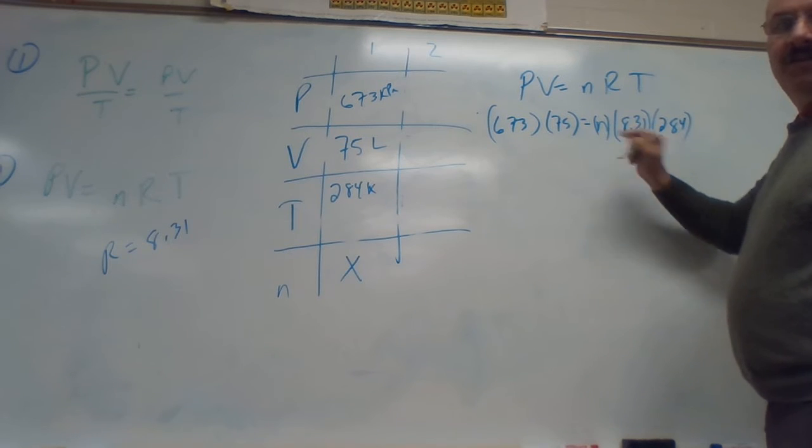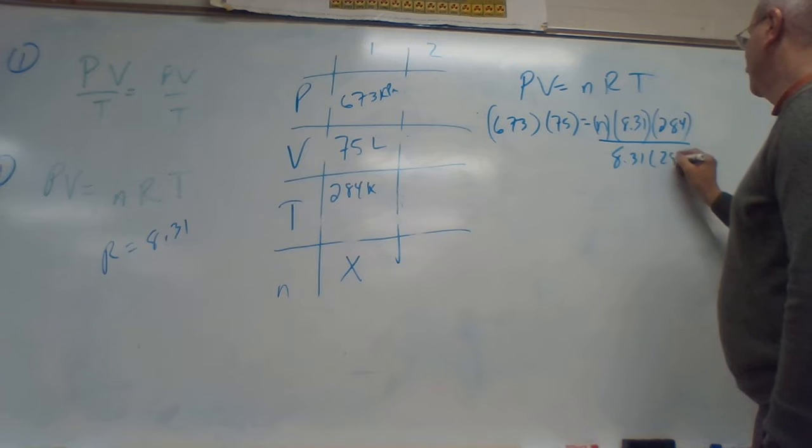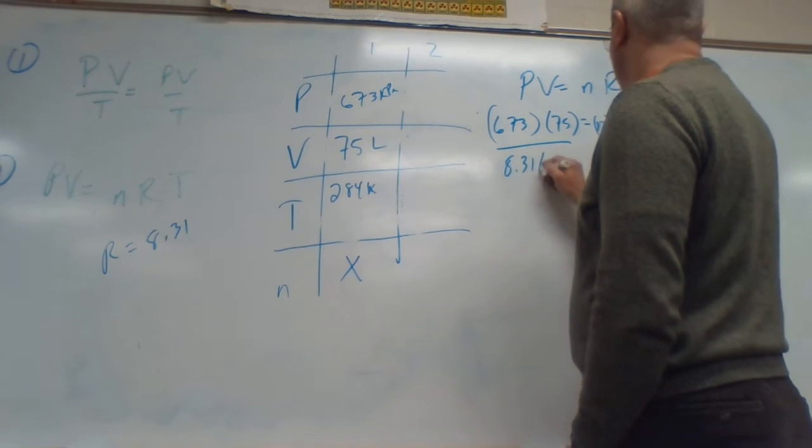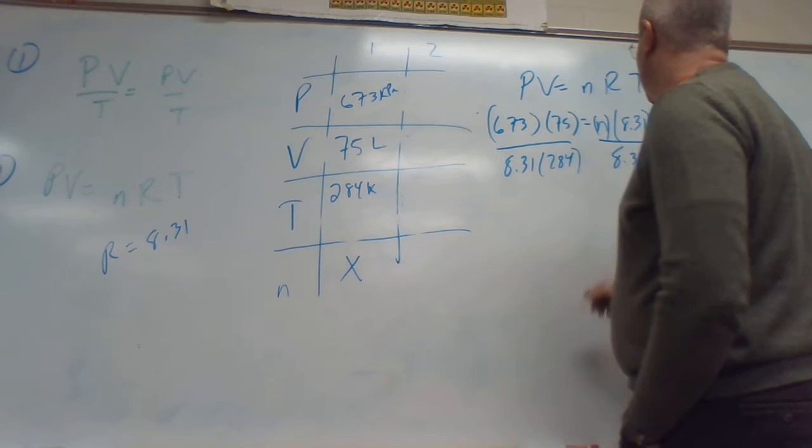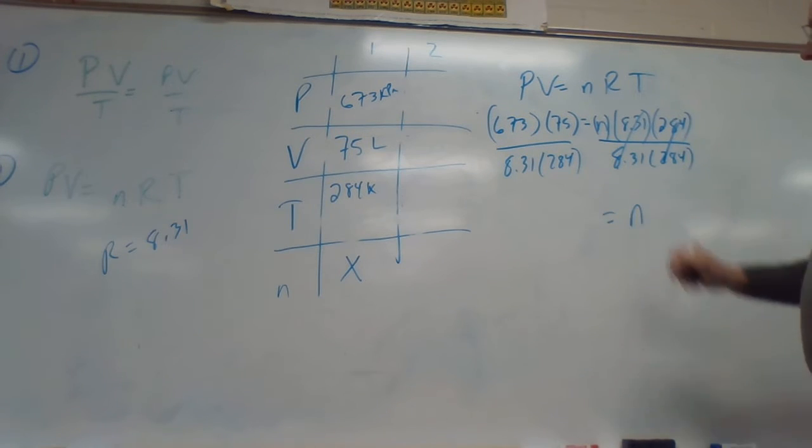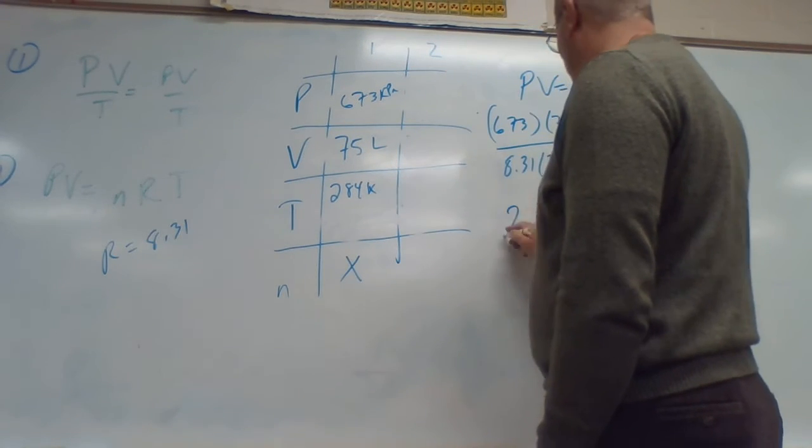Now I've got to do a solve for this unknown, which is N. So I've got to divide by 8.31 times 284 on both sides. So that gets rid of those, gets rid of those, leaves me with N. That's my moles.